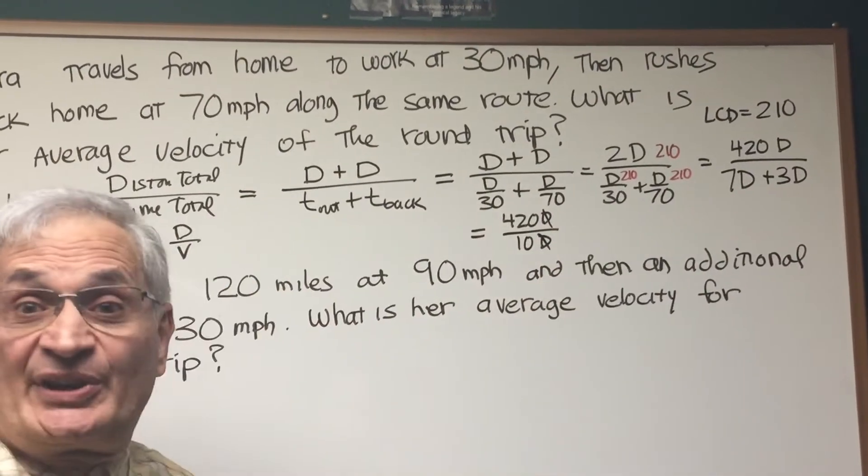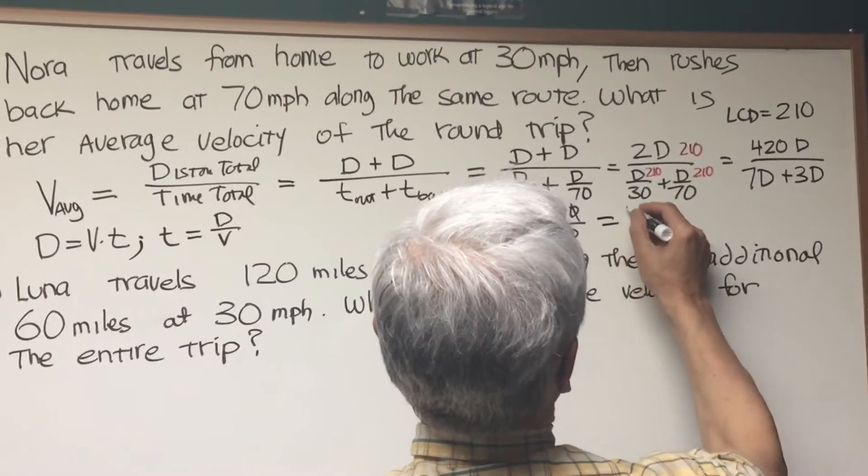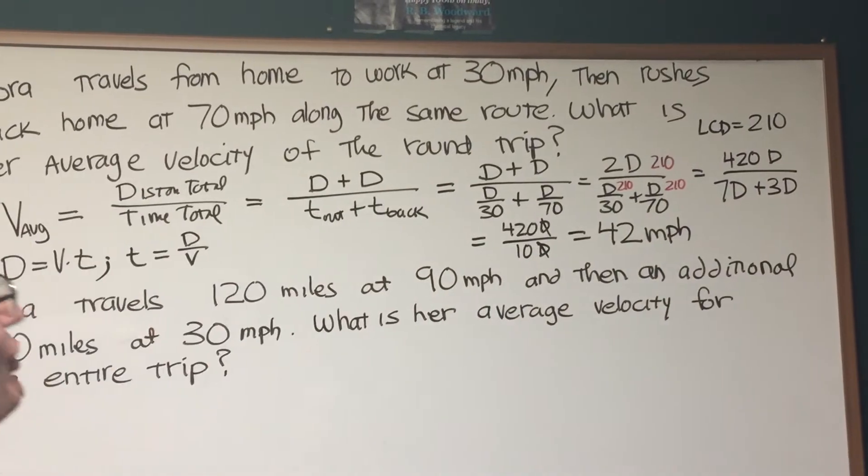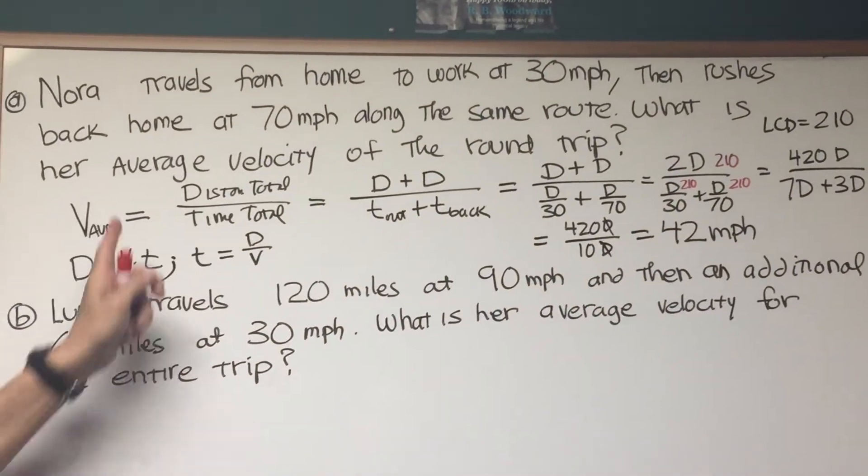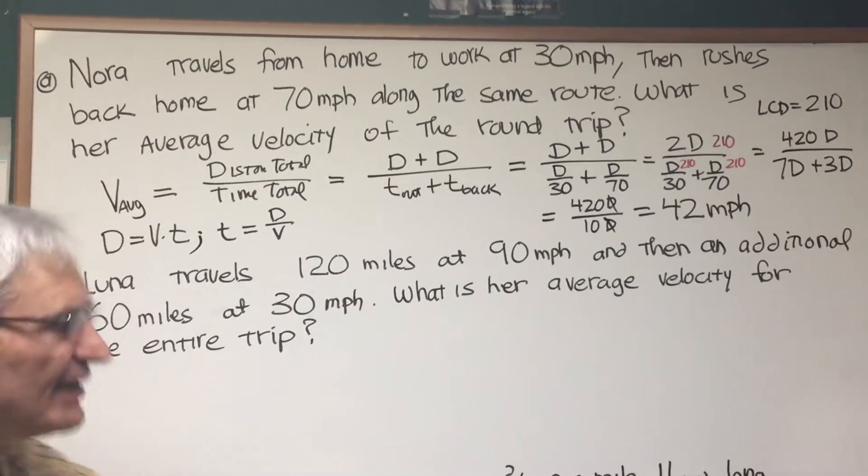Well, the Ds cancel out. We didn't need the distance in the first place. 420 over 10 is 42, and there is the average velocity. So it's not the average of just 70 and 30. We have to go through this formula for average velocity, total distance over total time.